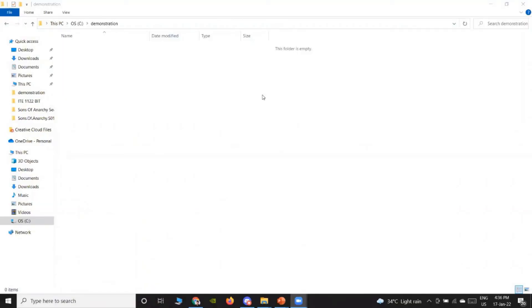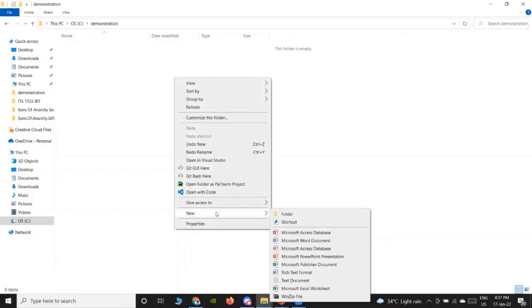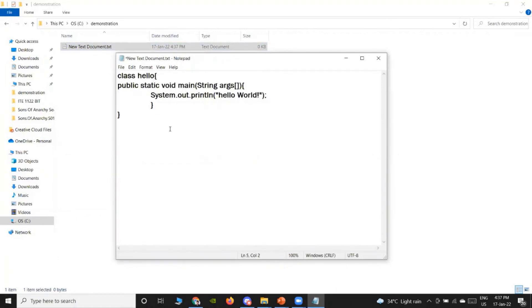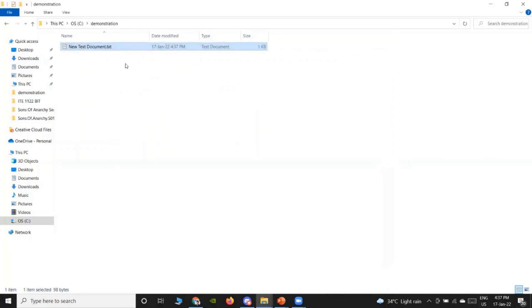After you have successfully installed Java in your computer and added Java to the path variable, you must be able to write your first simple Java program. I will show you how to write your Hello World Java program using a simple text editor. First, create a new text document. Now, copy-paste this piece of code in your own text document. This simple piece of code will print out Hello World when executed. Now, make sure to save this document and rename it as hello.java.